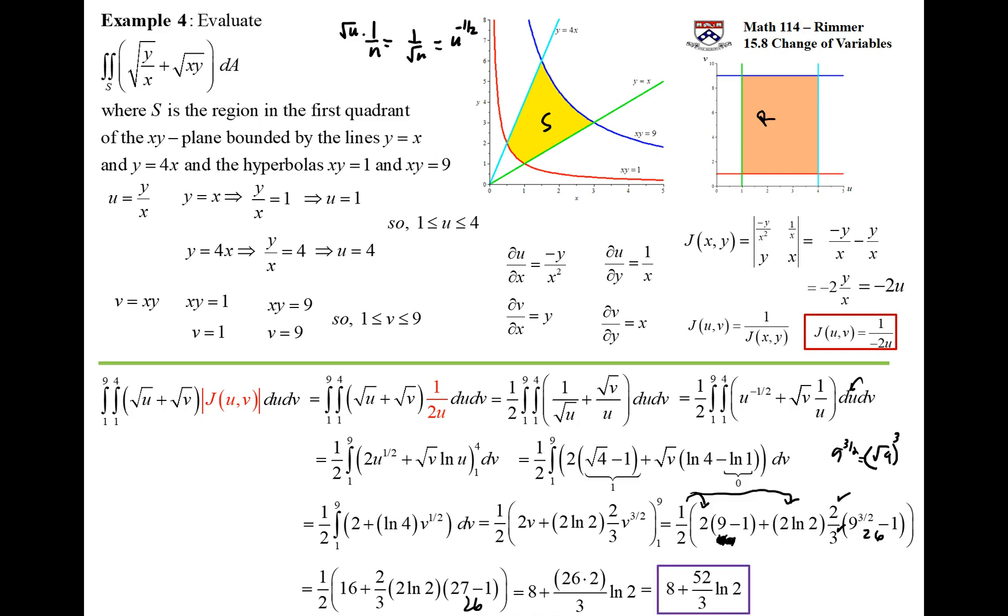Okay. So the Jacobian is not constant—that's the point behind this example. The actual converting is into a nice rectangle, but it's not straightforward converting. And our choice of u and v became evident by looking at the integrand and seeing what can we pick to make the integrand simpler. And we were lucky enough to have the integrand be simpler and the region be simpler.